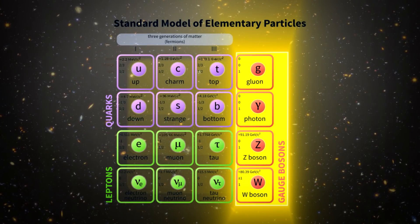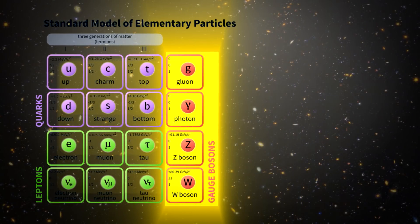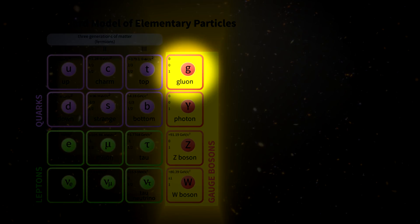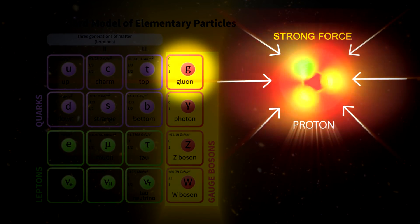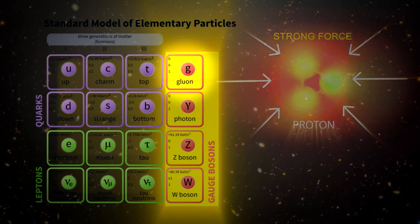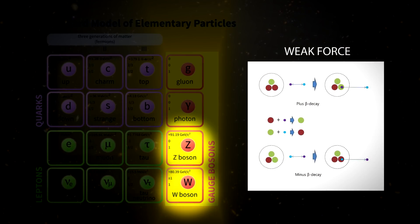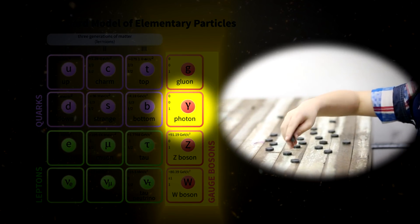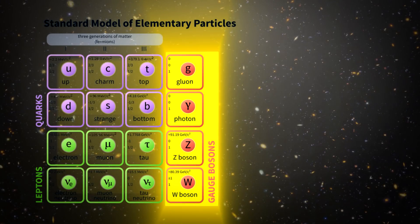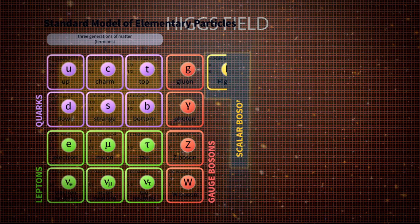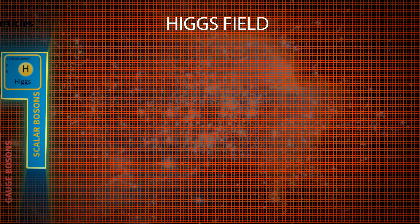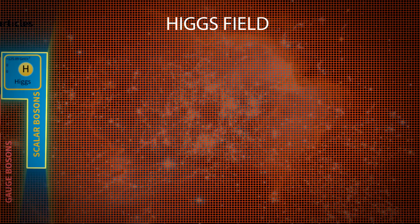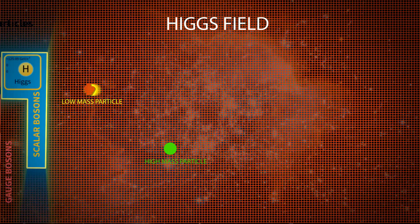The gauge bosons are force carriers and are responsible for three fundamental forces of nature. Gluons mediate the strong force, which binds the nucleus of an atom. W and Z bosons mediate the weak force, which is responsible for radioactive decay. Photons mediate the electromagnetic force, which causes light and magnetism. And the recently confirmed Higgs bosons give all fundamental particles their mass by interacting with them. Higgs does not interact with photons and gluons, thus they are massless.